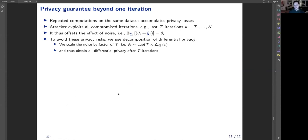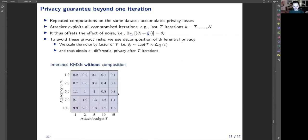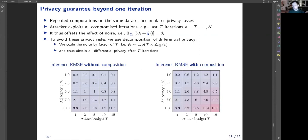Finally, we show that we can extend privacy guarantees beyond one iteration. We assume that T iterations are compromised and available to adversary, so it can average the results of voltage updates across T iterations. When we look at the root mean square error without using the scaling of the noise, we show that as more information becomes available to adversary, the root mean square error reduces.